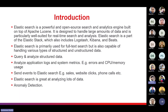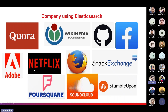Let's see what companies are currently using Elasticsearch. Some of them include Quora, Wikipedia, GitHub, Facebook, Adobe, Netflix, Mozilla, Stack Exchange, Foursquare, SoundCloud, and many more. I've chosen just a few to highlight. Now let's go to the basic architecture.